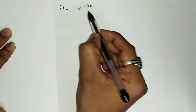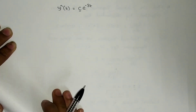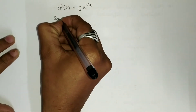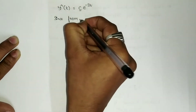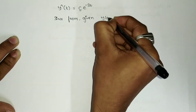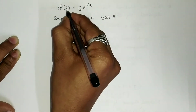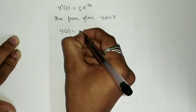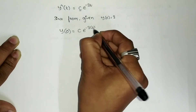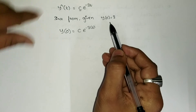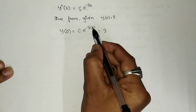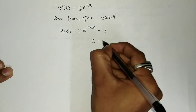We need to find the unknown parameter C. From the given initial condition y(0) = 3, substituting t = 0: y(0) = C · e^(-3×0) = C · e^0 = C × 1 = 3. Therefore C = 3.